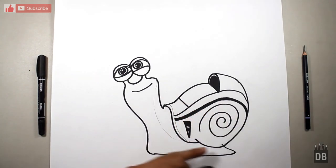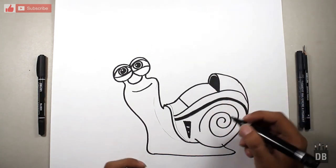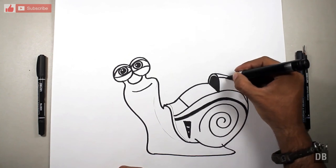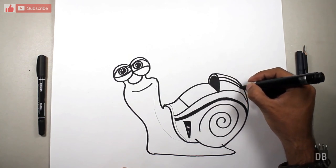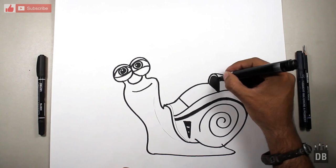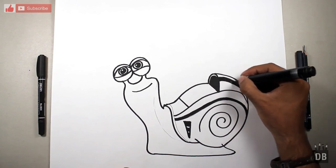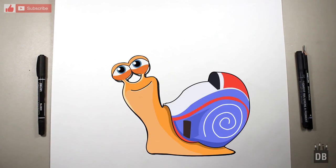When you color it, the things will be defined more. This is the outline drawing and our character Turbo is ready.